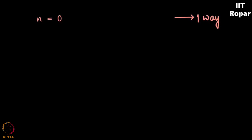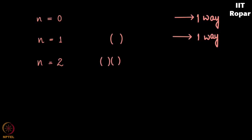When n is 1, we have one open and one closed parenthesis, so the only way to do this is one way. When n is 2, we have two open and two closed parentheses, so the two possibilities give us two ways of doing this.